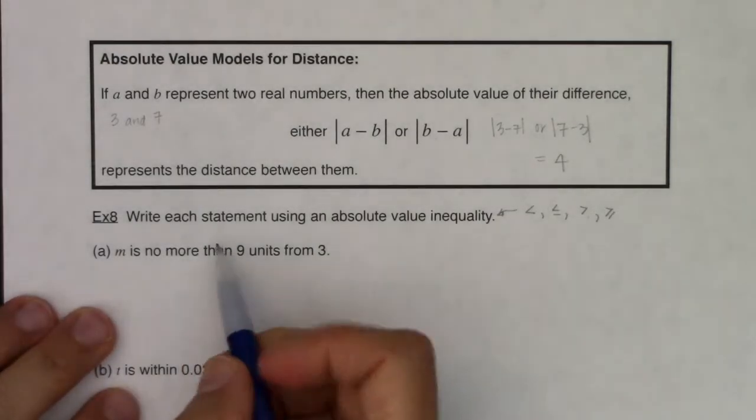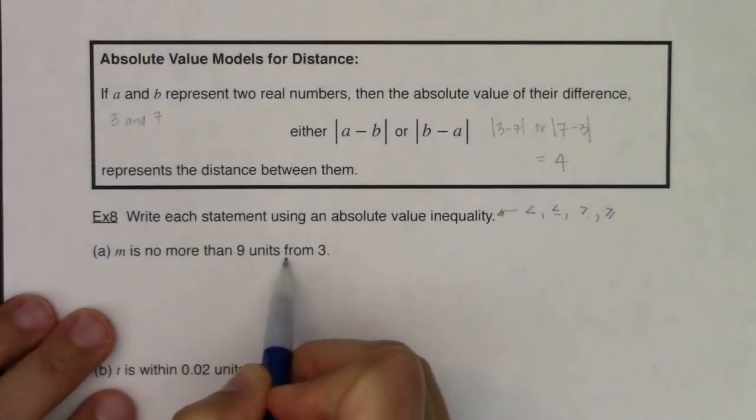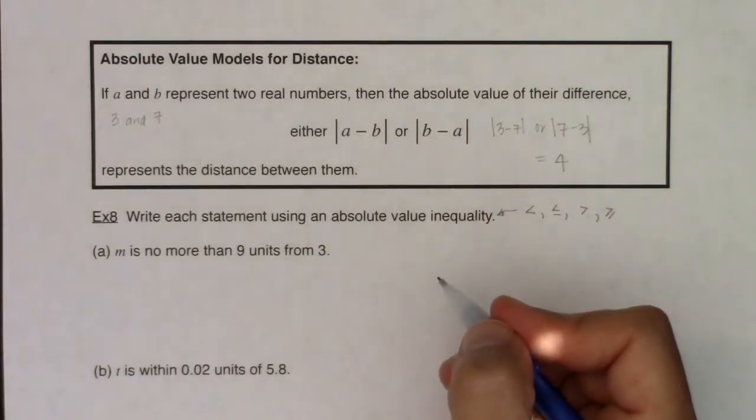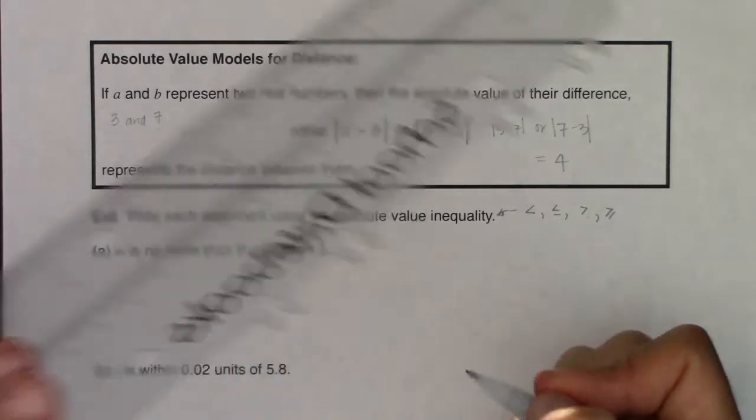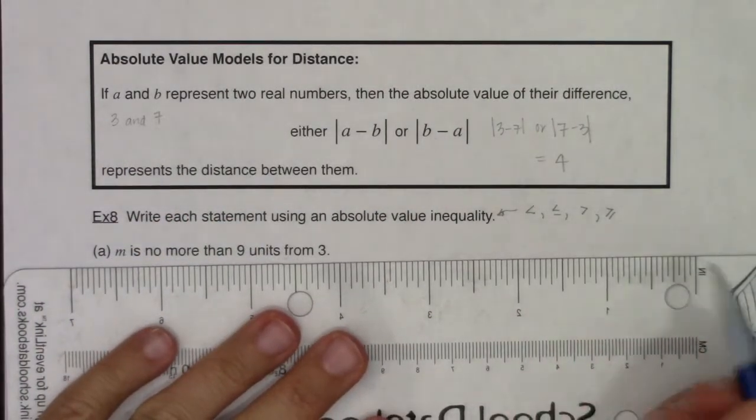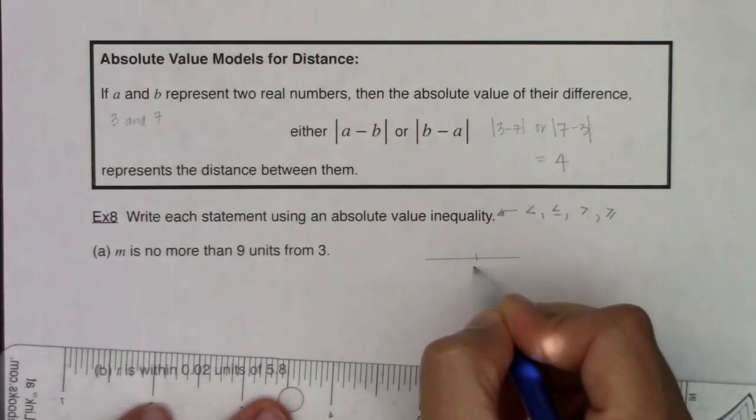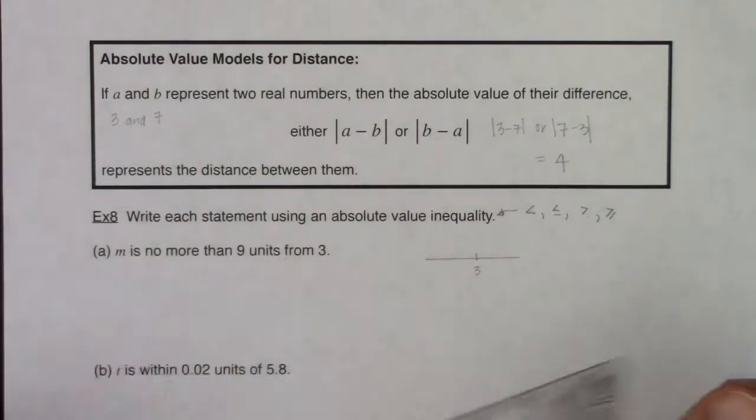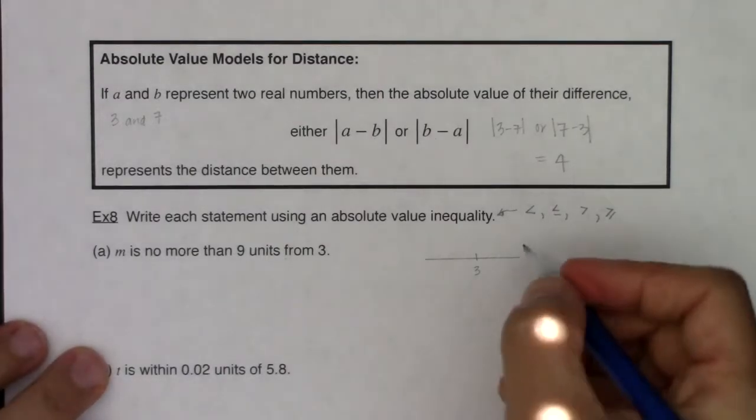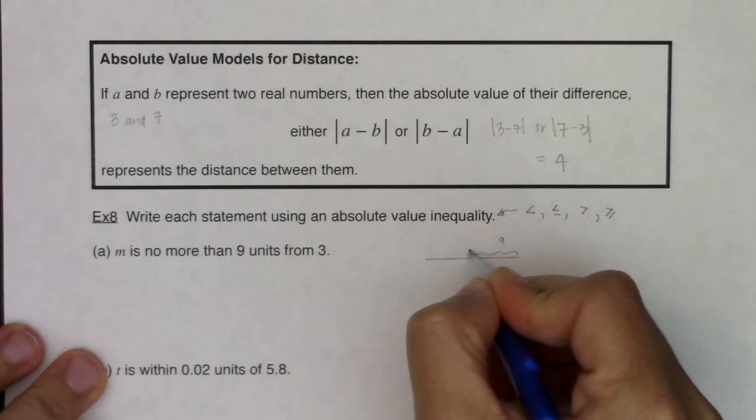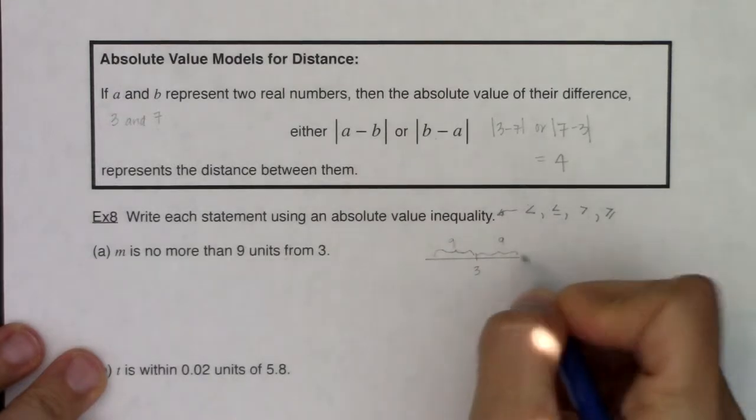m is no more than nine units from 3. Let me give you a visual. If I was going to make the number line, and I'm not asking us to solve this, I just want to give us a graph idea. If I was no more than nine units from 3, I could go in either direction. I'm looking for numbers that are no more than nine units either way, nine units from 3.